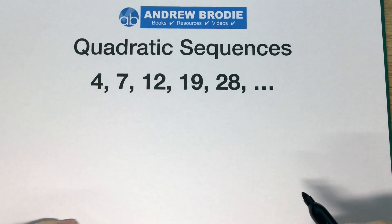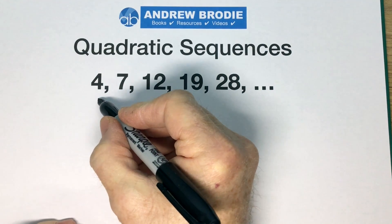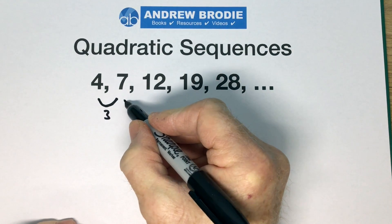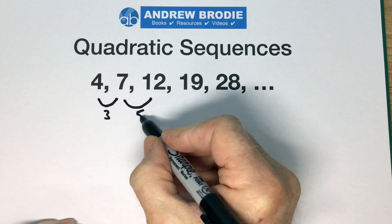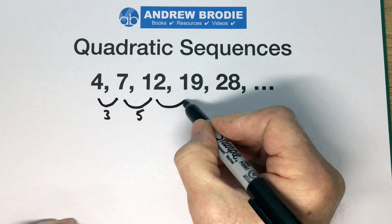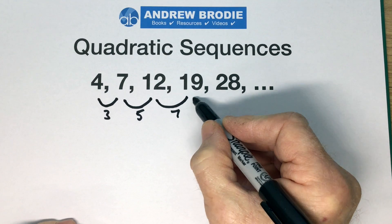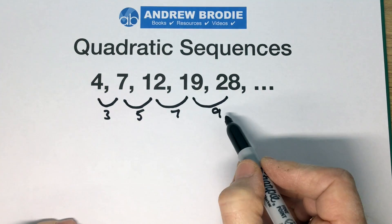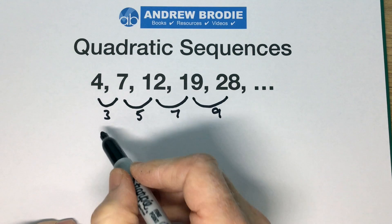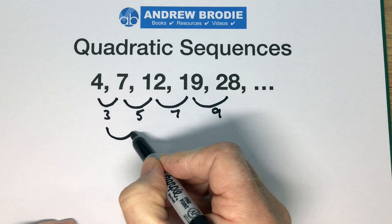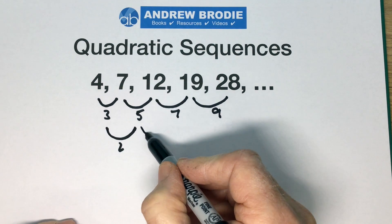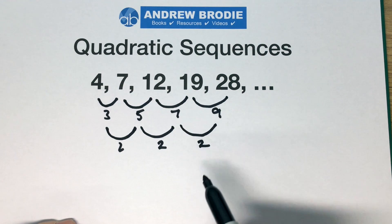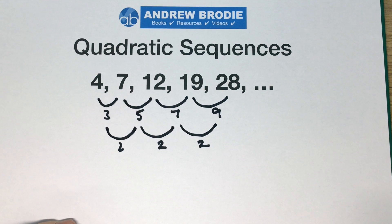This is a quadratic sequence. Watch how it grows: 4 add 3 makes 7, 7 add 5 makes 12, 12 add 7 makes 19, 19 add 9 makes 28. Those we call the first differences. But look — 3 add 2 makes 5, 5 add 2 makes 7, 7 add 2 makes 9. This is what we call the second difference.